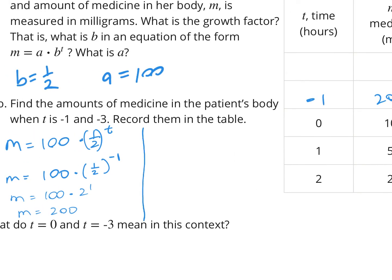For T equals negative 3 hours: M equals 100 times (1/2) to the negative 3. Inverting the fraction, it becomes 100 times 2 to the 3rd power. And 2 to the 3rd is 8, so we do 100 times 8, giving us 800 milligrams.